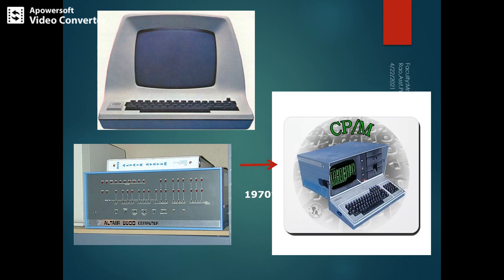The main features of the third generation were integrated circuits that are small in size, generate less heat, and consume less electricity. However, they were costly. They are faster and more reliable compared to the previous two generations and support high-level languages. Some computers produced in this generation include the IBM 360 series, the Honeywell 6000 series, and the PDP — Personal Data Processor.